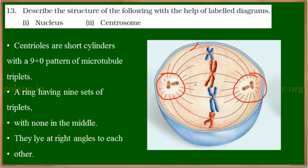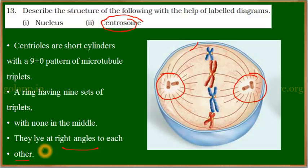This kind of centrioles are found in the eukaryotic animal cell. Two centrioles together form a centrosome. They are absent in plant cells and always lie at right angles to each other. You can see the arrangement — they will be right angle to one another.